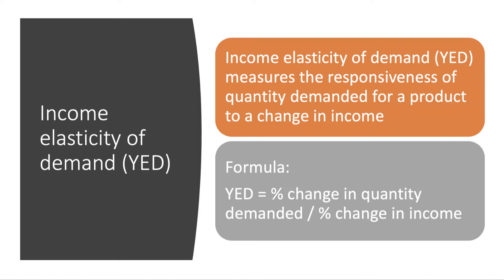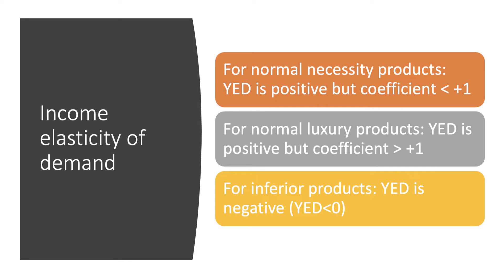Moving on to income elasticity of demand, or YED, which tries to capture how responsive demand is to a change in consumer income. The formula is the percentage change in quantity demanded of good X divided by the percentage change in consumer income. There are essentially three types of products. For a normal necessity product — maybe fresh fruit or toothpaste — the income elasticity is positive but the coefficient will be less than plus one, somewhere between zero and plus one. For a normal luxury product — fine wines, overseas holidays, luxury items — the income elasticity is positive again but the coefficient is greater than plus one.